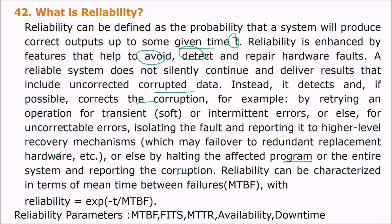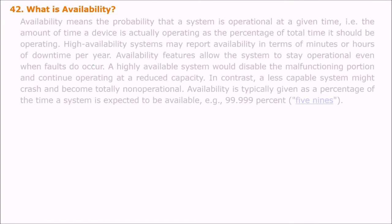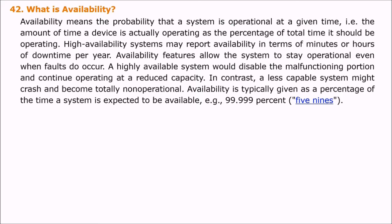Reliability can be characterized in terms of mean time between failure (MTBF), expressed as e to the power of minus t divided by MTBF. Key reliability parameters include MTBF, MTTR, availability, and downtime. Availability is the probability that a system is operational at a given time — the amount of time a device is actually operating as a percentage of total time it should be operating.